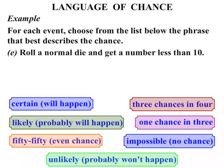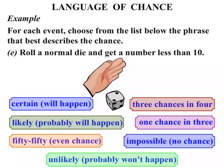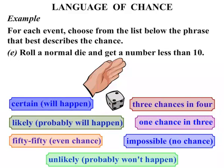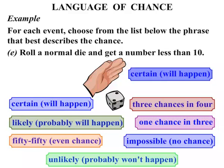What about if we roll a normal die and get a number less than ten? Well on a normal die the numbers are one, two, three, four, five, and six. So the chance that you will get a number less than ten — well that's certain, it definitely will happen.